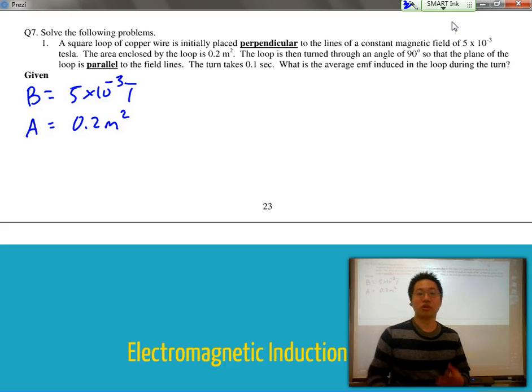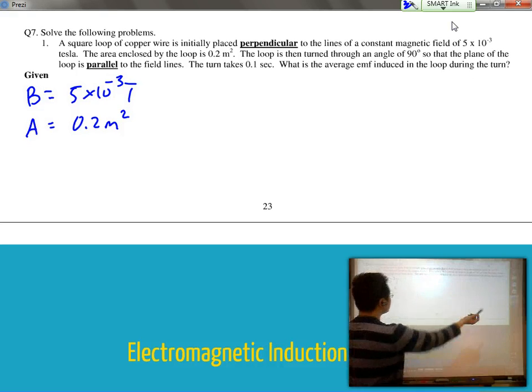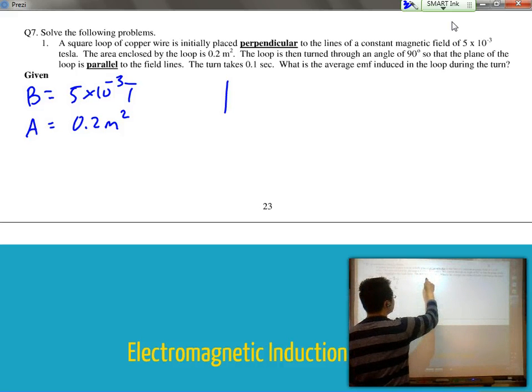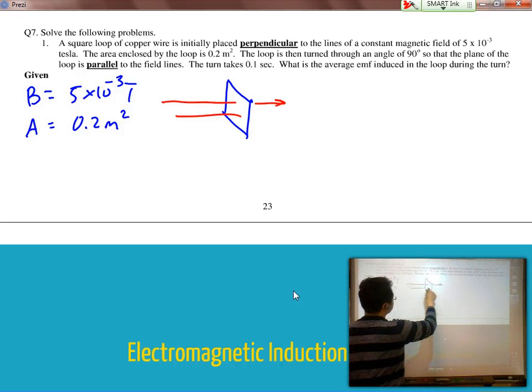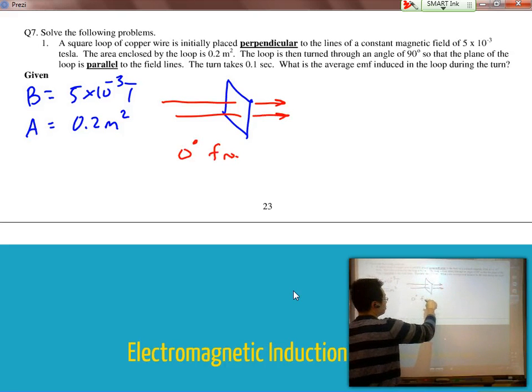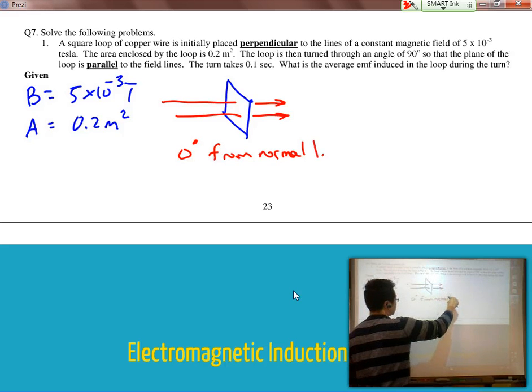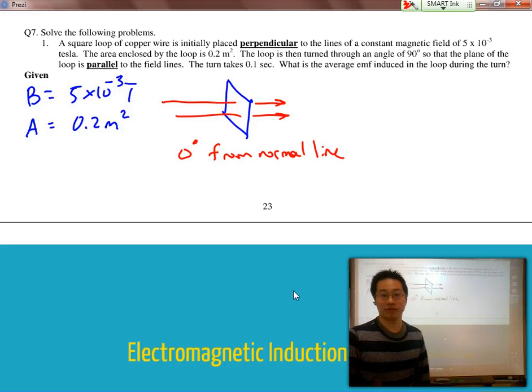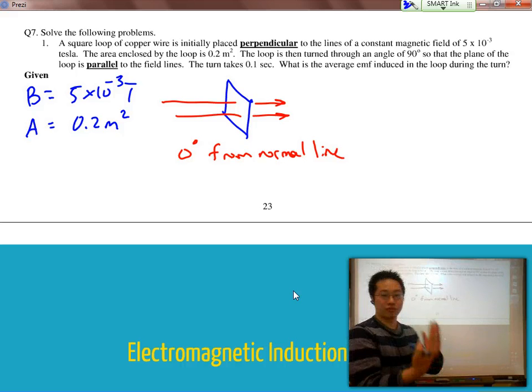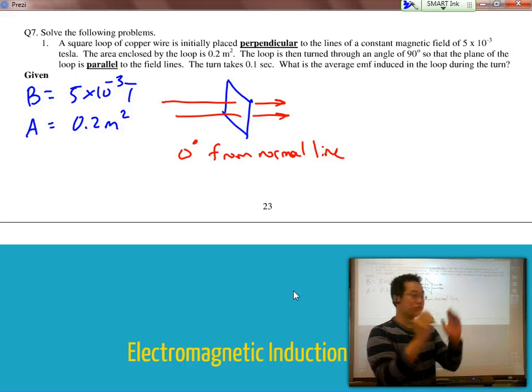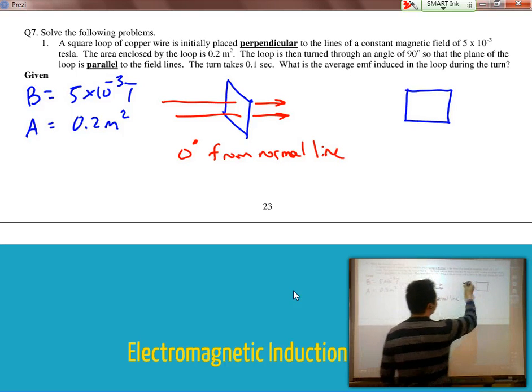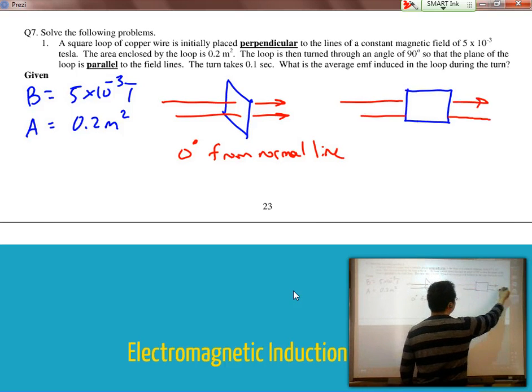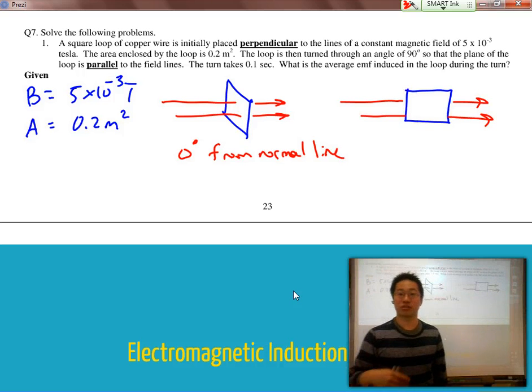The loop is then turned through an angle of 90 degrees so that the plane of the loop is parallel to the field lines. So if I were to draw what this is talking about, originally the magnetic field lines were going straight through. So it's actually 0 degrees from the normal line, meaning that we have our maximum amount of flux. But then they take that loop and they rotate it. So rather than having it go straight through, now the loop looks exactly like that. So when you have the lines passing through, you can see that none of the lines actually pass through the loop itself.